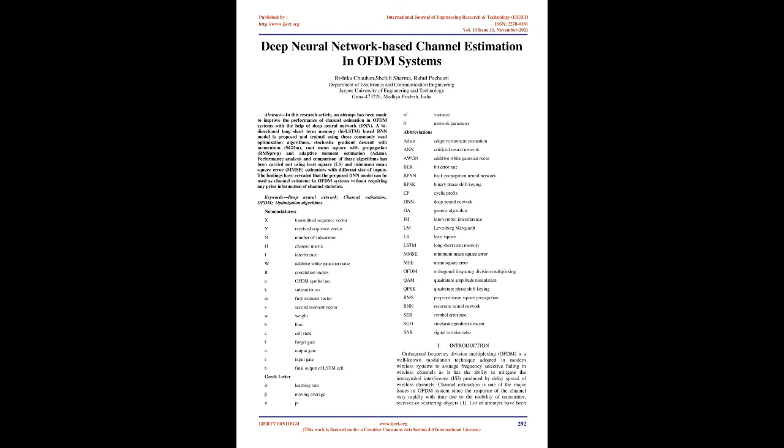Nomenclatures: X - Transmitted Sequence Vector, Y - Received Sequence Vector, N - Number of Subcarriers, H - Channel Matrix, I - Interference, W - Additive White Gaussian Noise, R - Correlation Matrix, n - OFDM Symbol Number, k - Subcarrier Number, m - First Moment Vector, v - Second Moment Vector, W - Weight, B - Bias, C - Cell State, f - Forget Gate, o - Output Gate, i - Input Gate, h - Final Output of LSTM Cell. Greek Letters: α - Learning Rate, β - Moving Average, π - Pi, σ² - Variance, θ - Network Parameter.